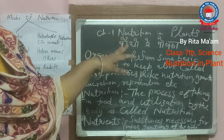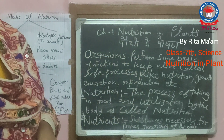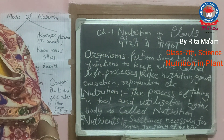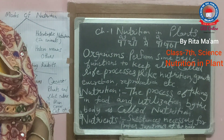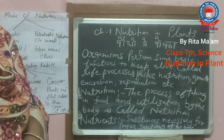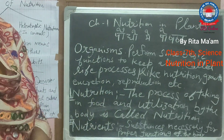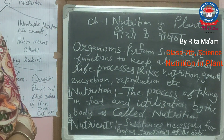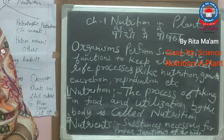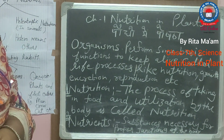They get nutrients from food like carbohydrates, fats, vitamins, minerals, etc. And plants get various nutrients like NPK — NPK means Nitrogen, Phosphorus, and Potassium.